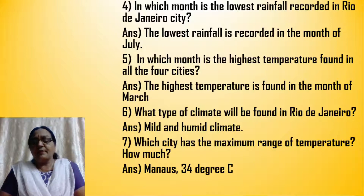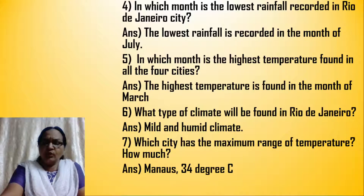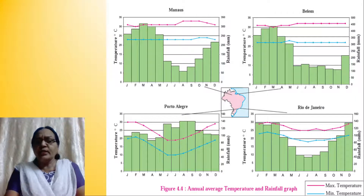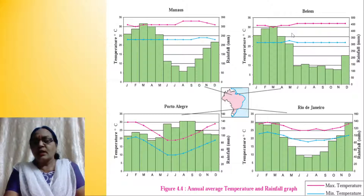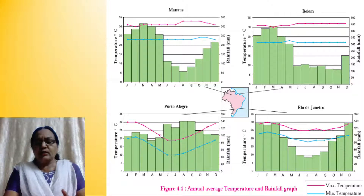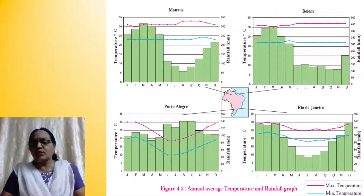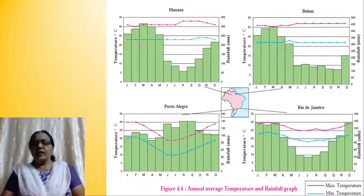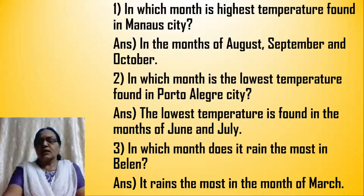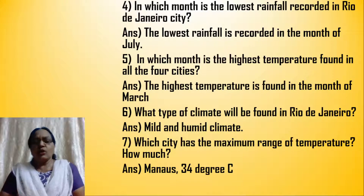What type of climate is found in Rio de Janeiro? Looking at the maximum and minimum temperatures, we find there is a vast difference in Manaus, and in Porto Alegre also a vast difference. But here in Rio de Janeiro, the maximum and minimum temperatures are more or less equal. So in Rio de Janeiro the climate is mild and also humid, because it is along the coastal region.